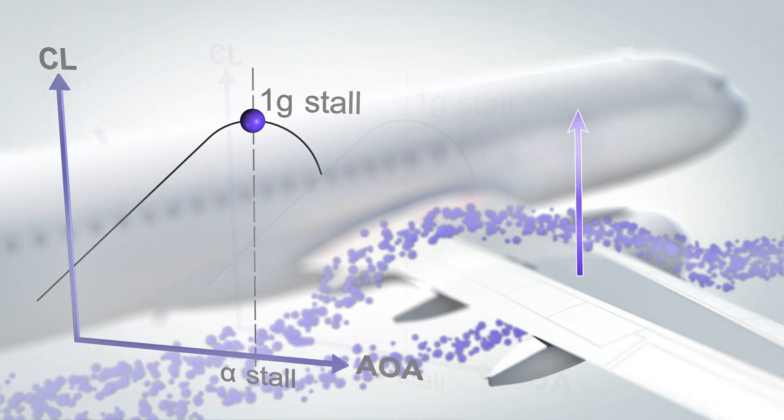When in manual flight, the bank angle and therefore the load factor can be even more increased during a level turn. Higher bank angle requires an increased angle of attack to maintain a level turn.